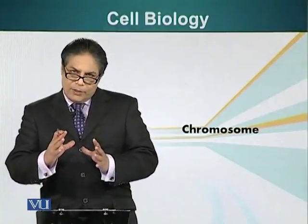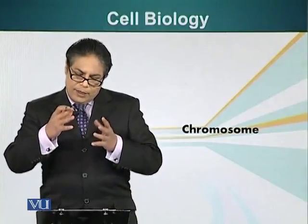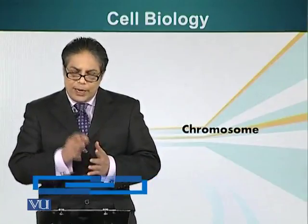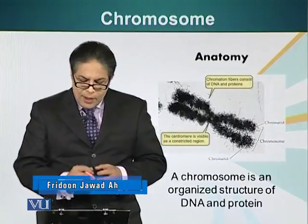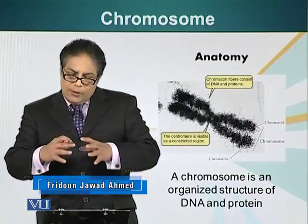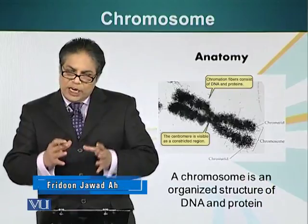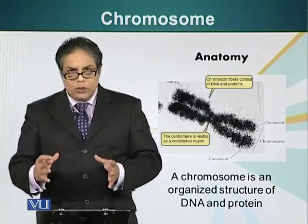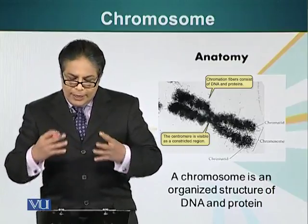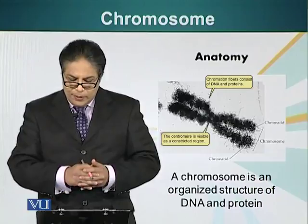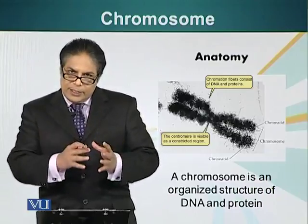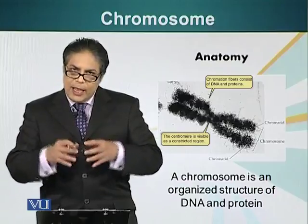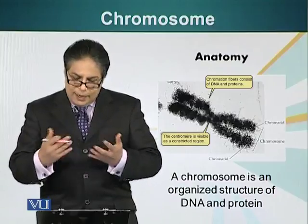Now let us look at some of the players in cell division. One of the most important players is the chromosome. Let us look at its structure. Chromosomes are generally not visible in cells which are in G1 phase — they are unwound, loose, and not present as discrete structures. When the cell decides to divide, chromosomes become condensed and they become visible under the microscope.